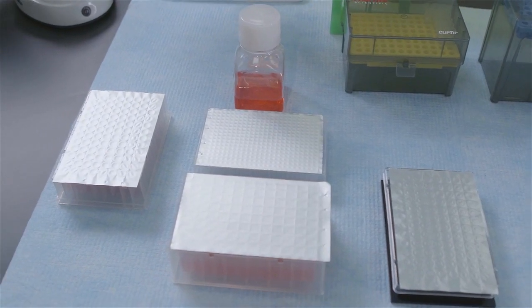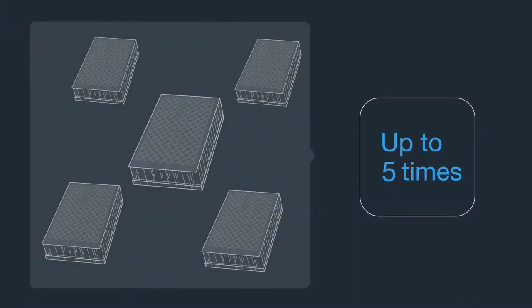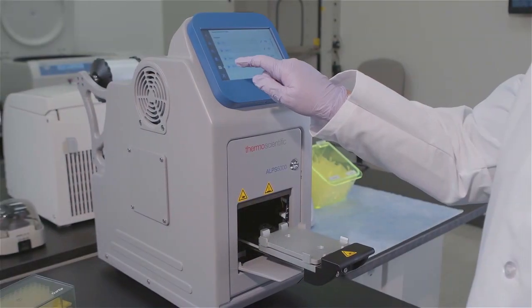This helps limit melting around the well, allowing each plate to be sealed up to five times. Switch easily between the two modes on the settings screen.